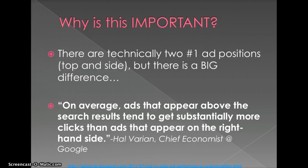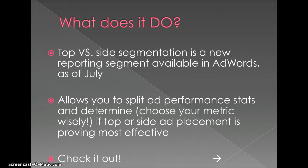The quote that got the whole ball rolling is from Hal Varian, who's a chief economist at Google. He said that on average, ads that appear above the search results tend to get substantially more clicks than ads that appear on the right-hand side. And that is true in most situations, but not all.